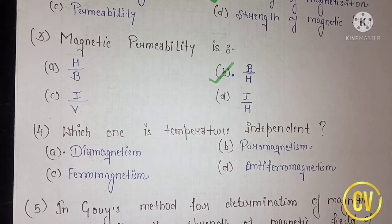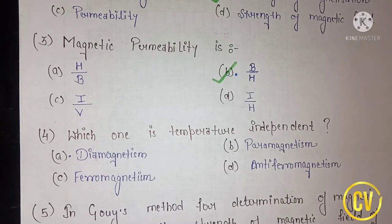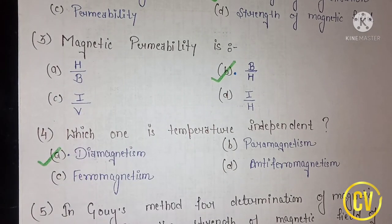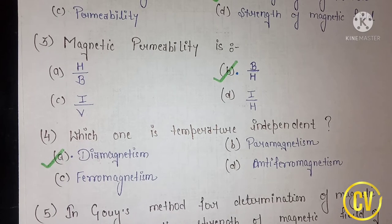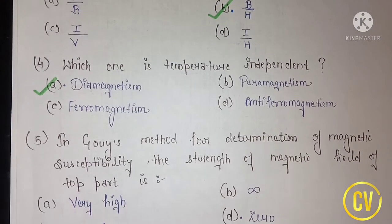The fourth question asks which property is temperature independent. You need to know that diamagnetism is always temperature independent. This is because whenever there is a pair of electrons, there is no issue of temperature — it is completely independent from temperature. So the correct option is option A, that is diamagnetism.